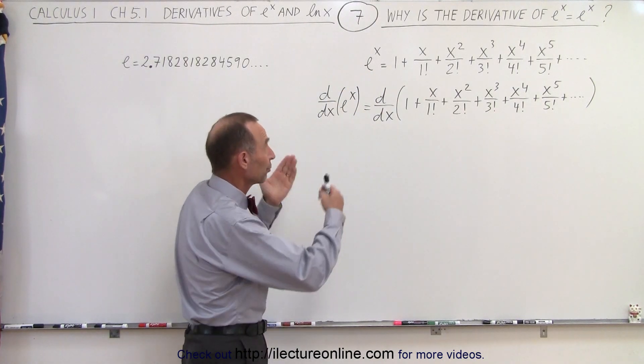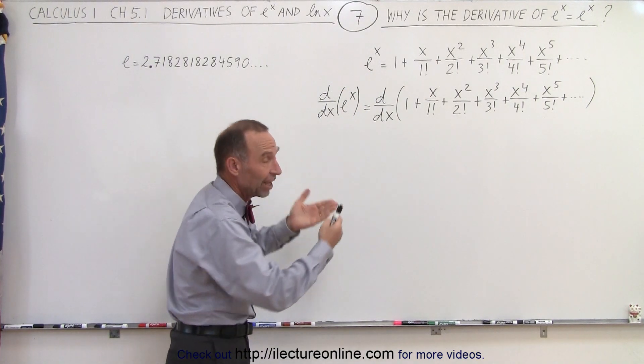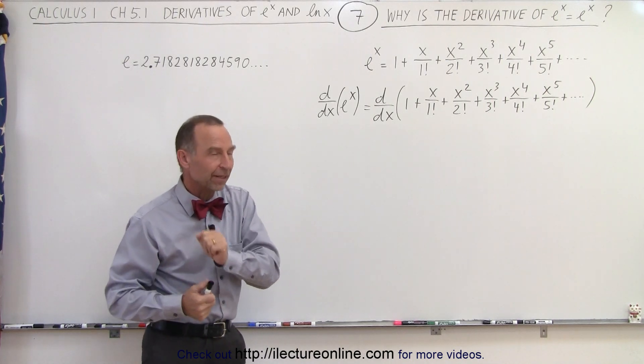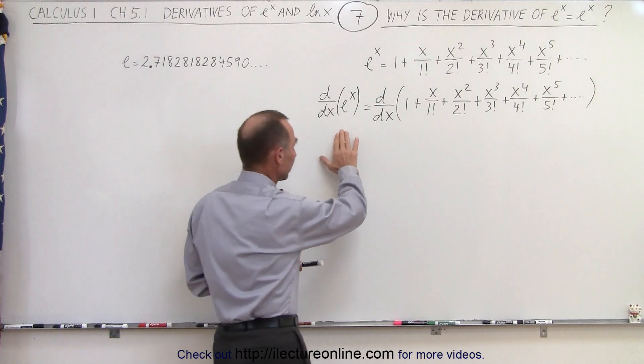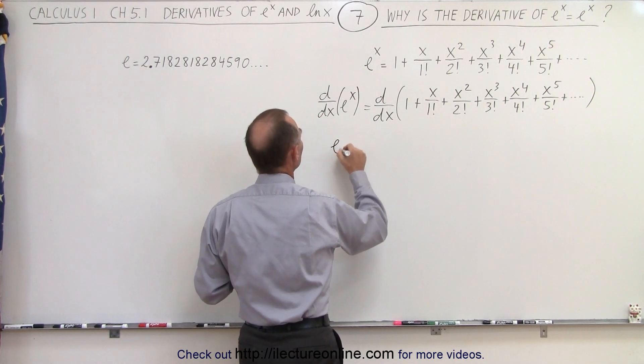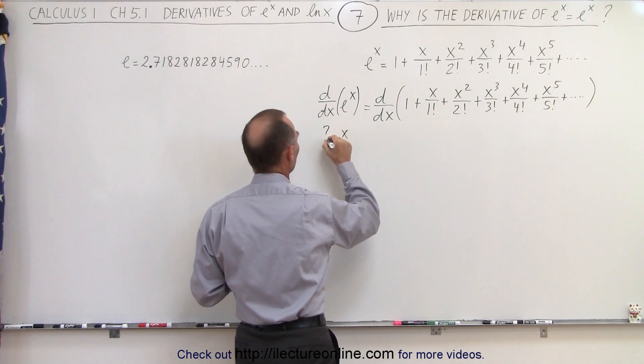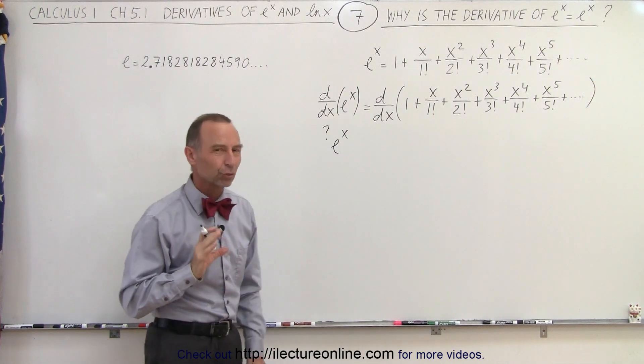Now what we're going to do is take the derivative of e^x, which is the same as taking the derivative of that infinite series, and let's see what we end up with. So this, presumably, is e^x, right? That's the question mark. How do we know that's true?